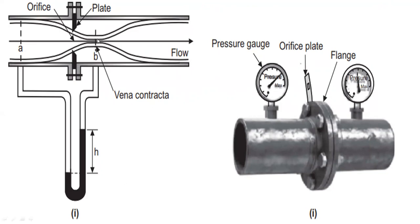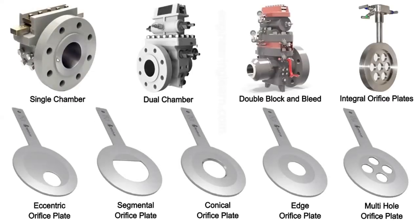The area of the orifice is far smaller than the cross-sectional area of the pipe. The flow from the upstream converges until a section downstream of the orifice plate is reached — the vena contracta. One arm of the U-tube manometer is connected upstream, and the other near the vena contracta. There are several types of orifice plates: single chamber, dual chamber, double block and bleed, integral, eccentric — where the orifice is not exactly at the center — segmental, conical, edge, and multi-hole orifice plates.